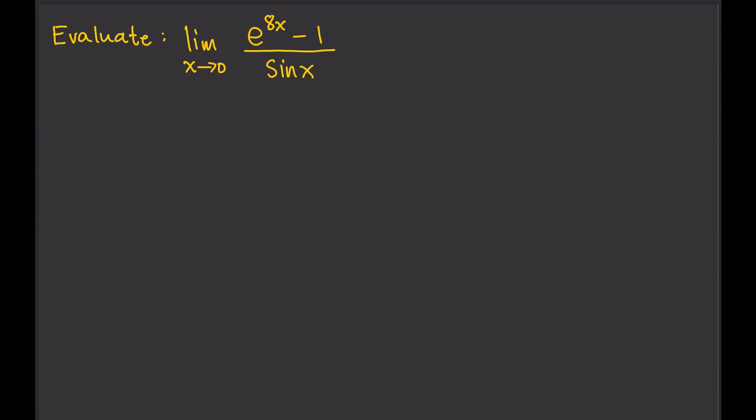Another example: the limit of e to the 8x minus 1 divided by sine x, as x approaches 0. Again, try plugging in 0 for x, and you'll get 0 divided by 0. So this one is still indeterminate.